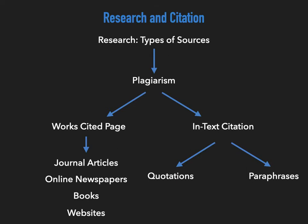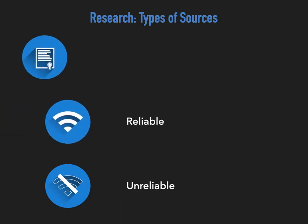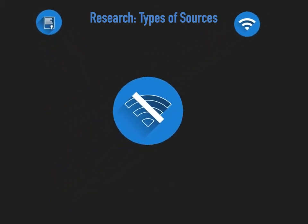Let's begin by discussing the various types of sources that are available. When researching, there are three different degrees or quality levels of sources that we may find. They are unreliable sources, reliable sources, and scholarly or peer-reviewed sources. These sources are arranged from worst at the bottom to best at the top. Let's discuss each of these levels beginning with unreliable sources.